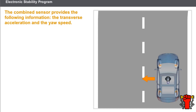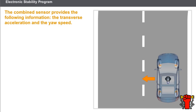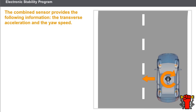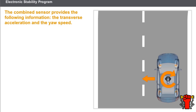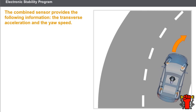The combined sensor provides the following information: the transverse acceleration and the yaw speed. This information allows the computer to determine the vehicle's true direction of travel. The sensor is located near the vehicle's center of gravity, usually underneath the center console.